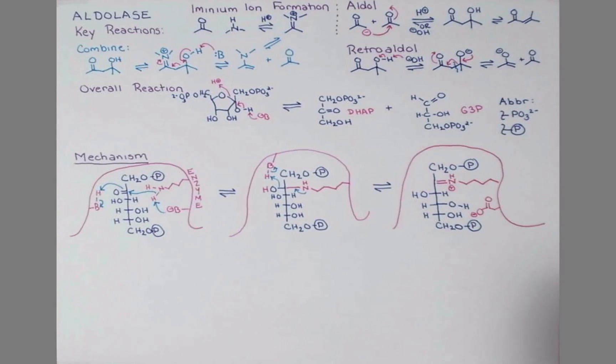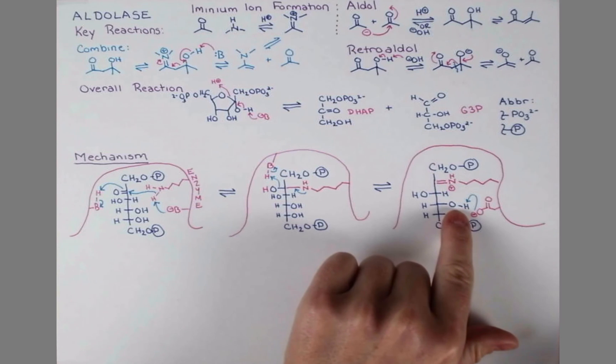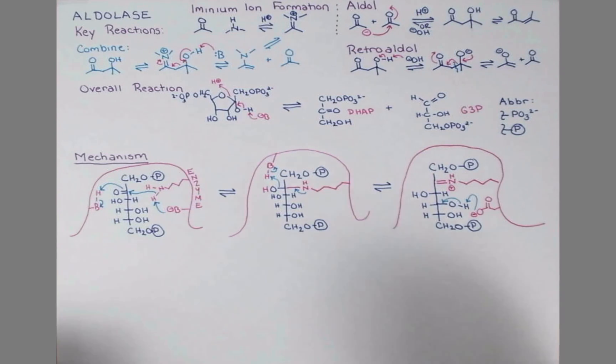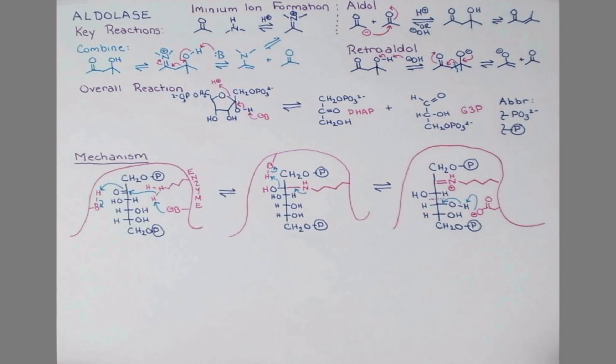We can show it taking off the proton. These electrons will push in to make a carbonyl. And I'm just going to mark the bond that cleaves with this little dotted line here, so the electrons making that bond will push up, and we can neutralize the positive charge on the iminium ion.